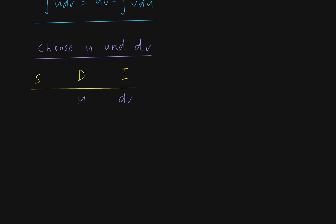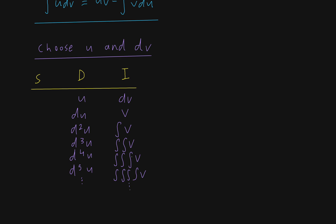For u, you keep differentiating: you get du, then d²u, d³u, d⁴u, d⁵u, and so on. For dv, you keep integrating: you get v, then the integral of v, the double integral, triple integral, quadruple integral, and so on. The signs in the S column alternate: plus, minus, plus, minus, plus, minus, and so on.